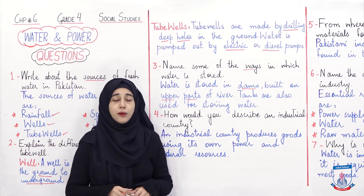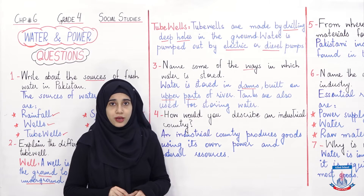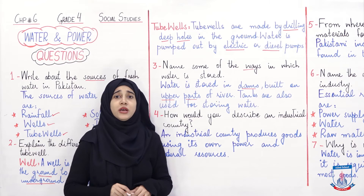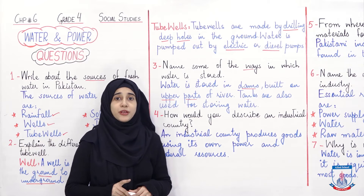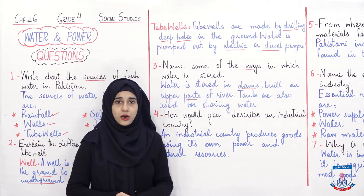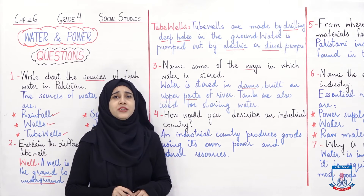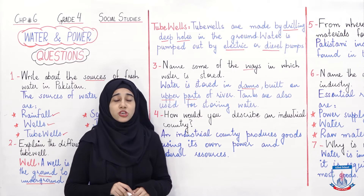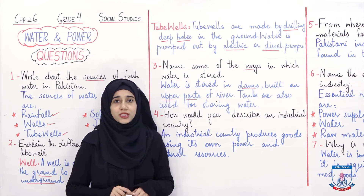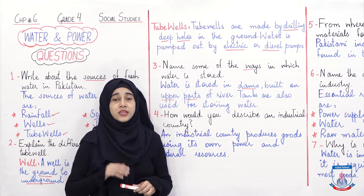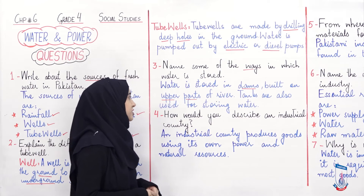Why is that so? Kya waha pe pressure zyada hota hai. Koi bhi dam chalane ke liye, ya us ki working ke liye, yeh zaroori hai ke paani ka pressure kaafi zyada ho. Isliye upper part of river pe dams banaye jate hain. Iske alawa dams ka yeh bhi function hota hai ke waha paani ki movement ko, uske flow ko, aur uske pressure ko manage karte hain. Isliye unhein dhare ke upar wale hisse mein banaya jata hai, yani upper part pe banaya jate hain.